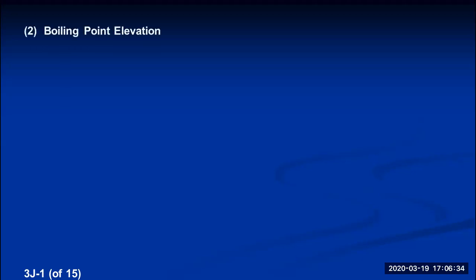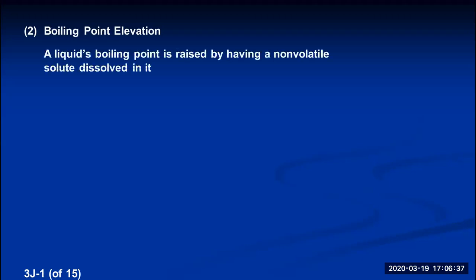This is lecture 3j and we're going to talk about the second and third colligative properties of solutions. Colligative property number two is boiling point elevation. Anytime a liquid has a non-volatile solute dissolved in it, that liquid will now have a boiling point that's higher than the pure solvent.